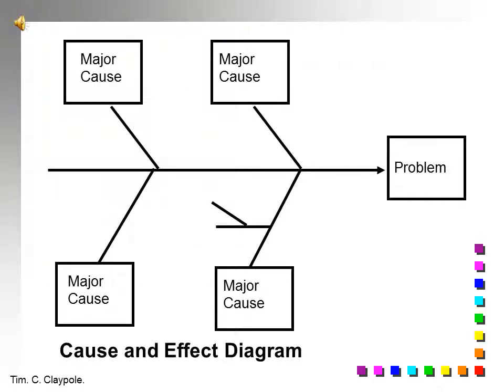The cause and effect diagram is sometimes known as the fishbone diagram because of its shape, but it was founded by a Japanese management scientist called Ishikawa, so it's also known as the Ishikawa diagram.